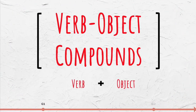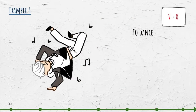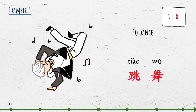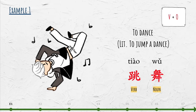Most Chinese verbs are actually composed of two parts to form verb-object compounds. For example, 'to dance' (跳舞) can be further divided as a verb (跳), which literally means 'to jump,' and a noun (舞), which means 'dance.' Thus, the Chinese word for 'to dance' literally means 'to jump a dance.'